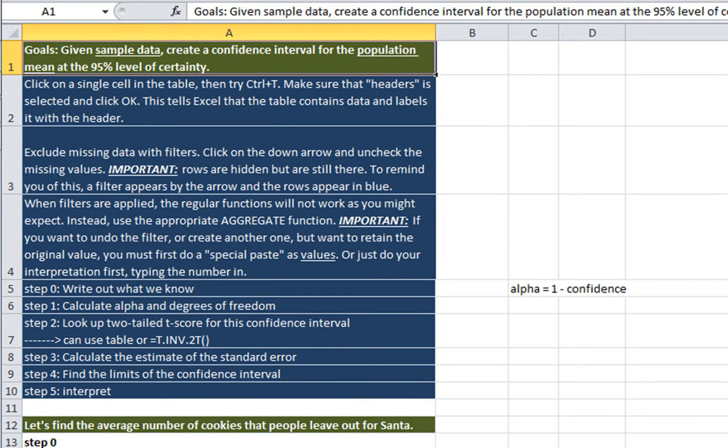In this video I'm going to show you how to take sample data and create a confidence interval for the population mean. We're going to do this at the 95% level of certainty.